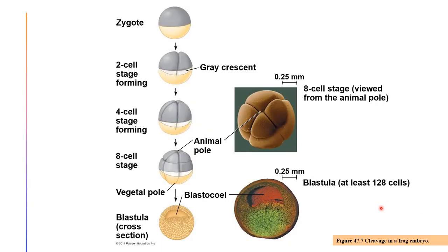Here again you see the cleavage in a frog embryo. First, you will see a fertilized zygote egg, and then it will eventually undergo the two-cell stage development. Then there is already the formation of a gray crescent, then the four-cell stage, then the eight-cell stage. The color of the animal pole is more likely darker than the vegetal pole. Eventually it will form a blastula, and if you take a look at the cross-section of a blastula, it would show you a blastocel. In a blastula of a frog embryo, there are at least 128 cells, and the size is around 0.25 millimeters.